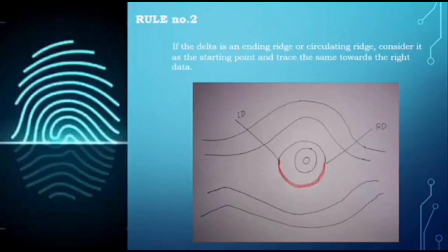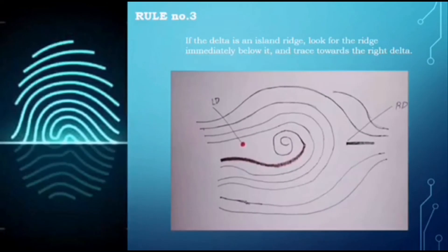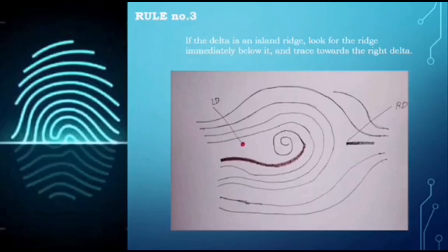Rule number three: if the delta is an island ridge, look for the ridge immediately below it and trace towards the right delta. The first step is to determine where the island ridge is. After identifying the island ridge, we look for the ridge immediately below it, and from there we trace towards the right delta. The illustration clearly demonstrates rule number three in ridge tracing.